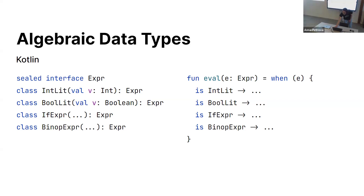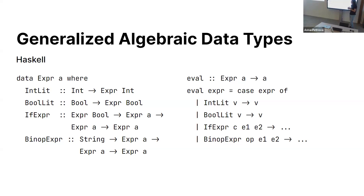To address this issue, we have generalized algebraic data types. They are generalized in that you may define a type variable during the definition of the type and specify its value in the specific constructors. For example, int literal will be only an expression of int, not an expression of any type. And you may match on this type in the same way as for algebraic data types. In this case, you will be able to specify a return type, because you will have an expression of A, and you can use A as a result. The compiler will understand that in the branch of int literal, A is equal to int, so while you are returning int, it may be used as A and will successfully type check.